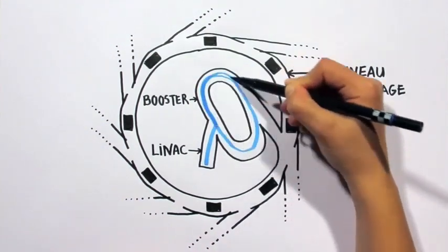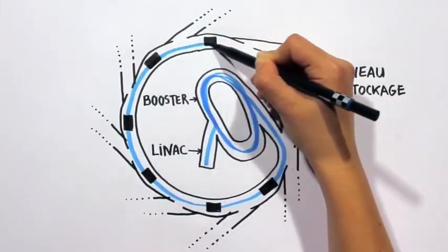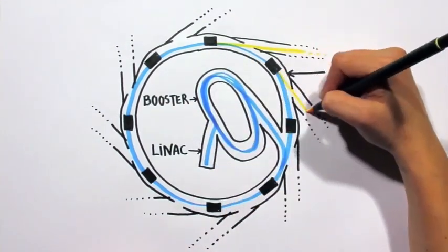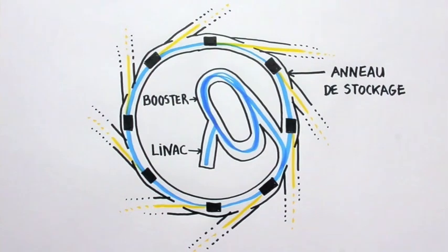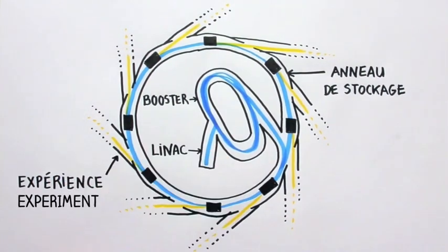Well, each time their trajectory is curved as they go through a magnet, these electrons lose energy in the form of very thin and very intense beams of light. This is what we call synchrotron radiation. This type of light is what the researchers use for their experiments.